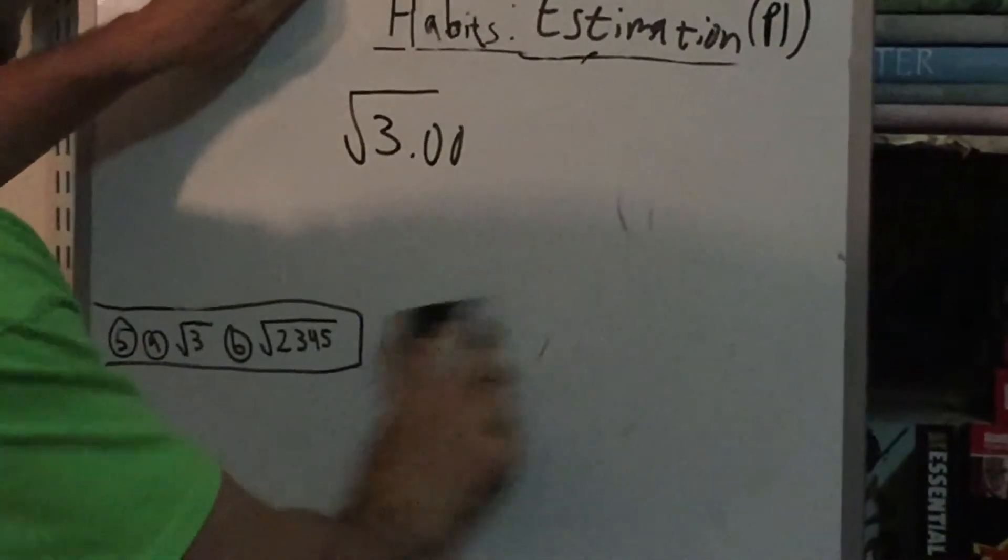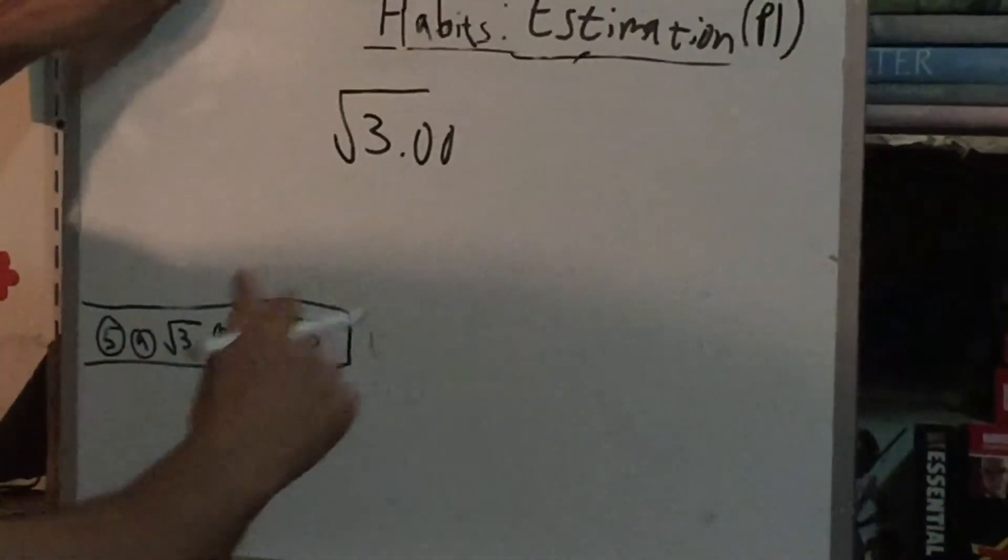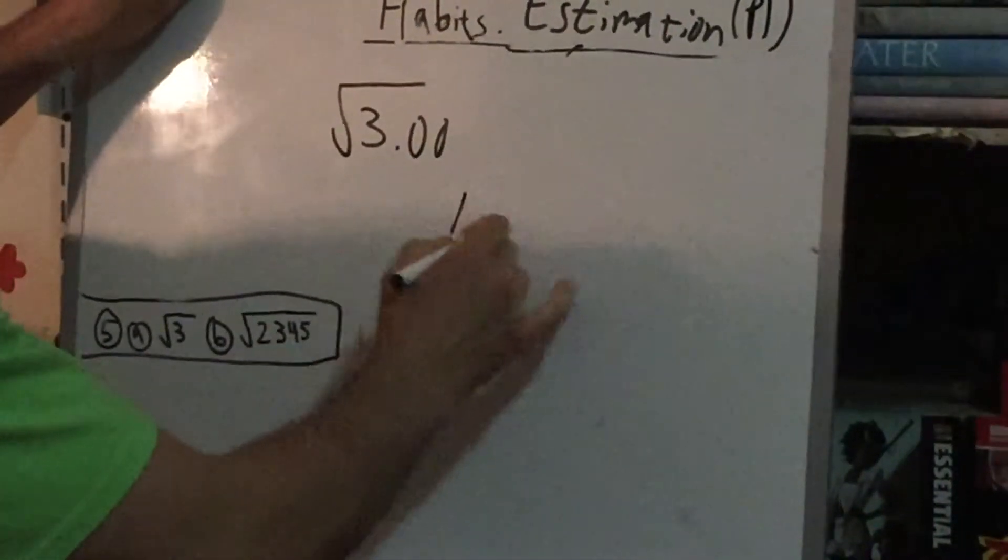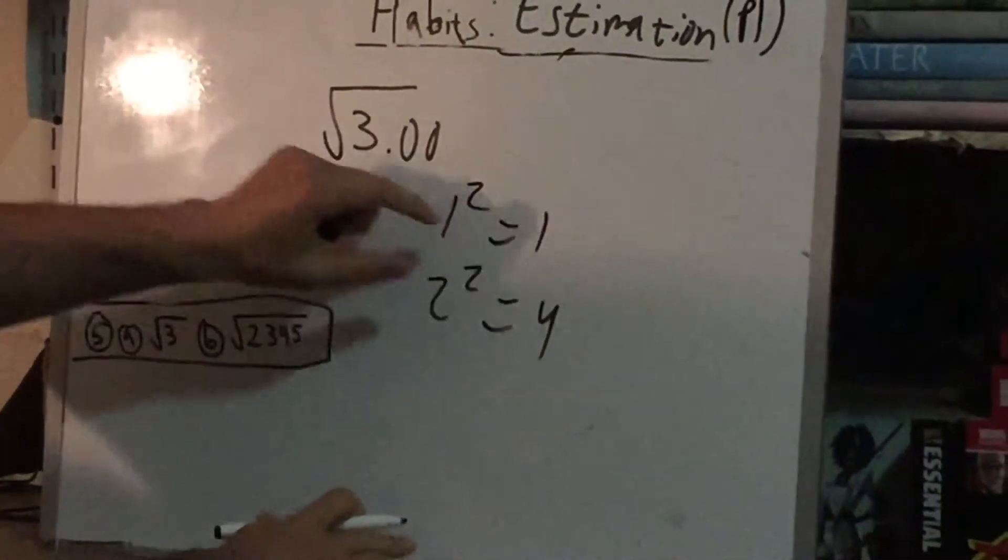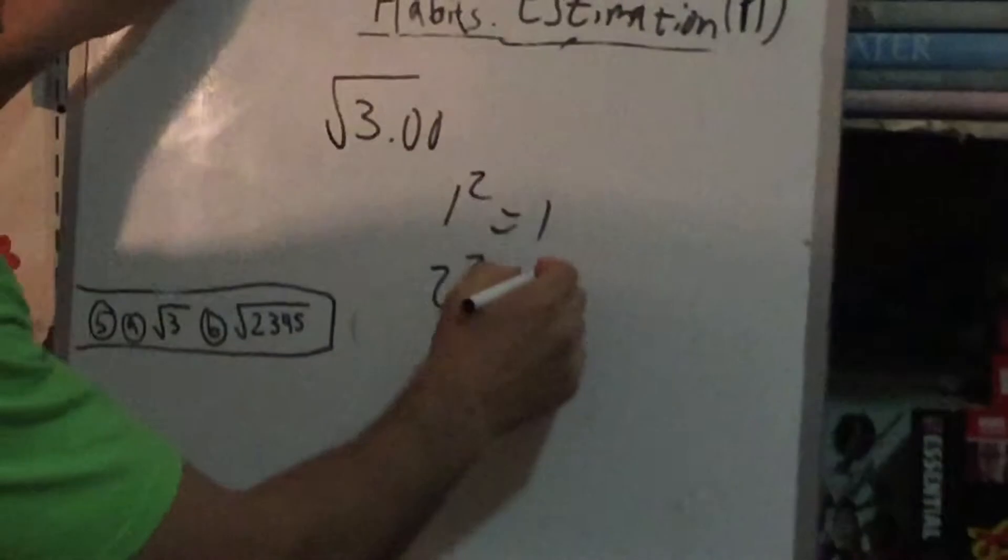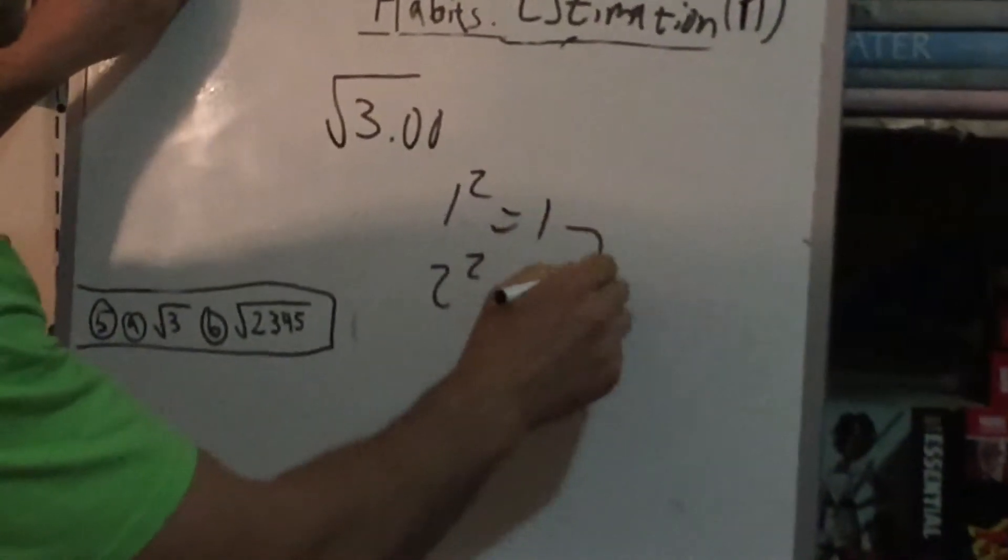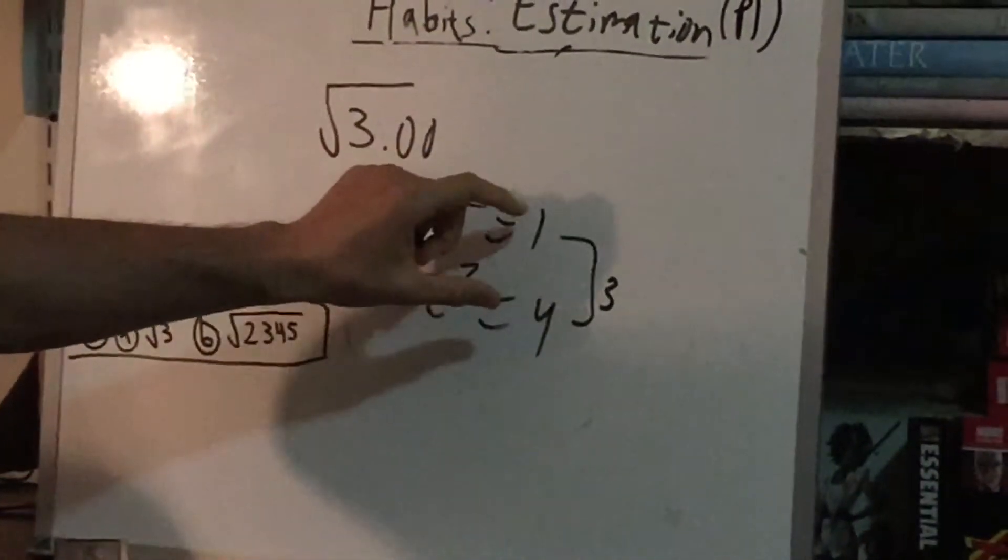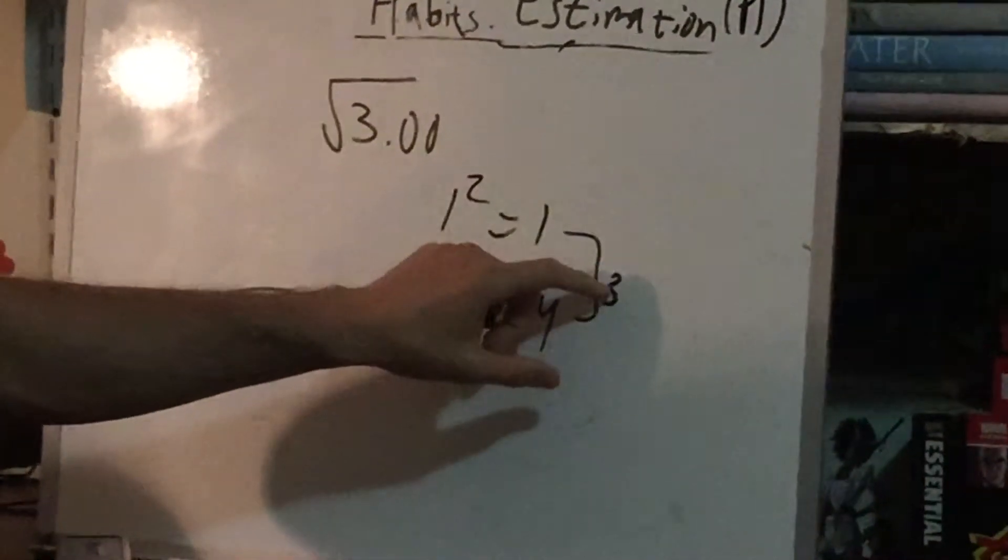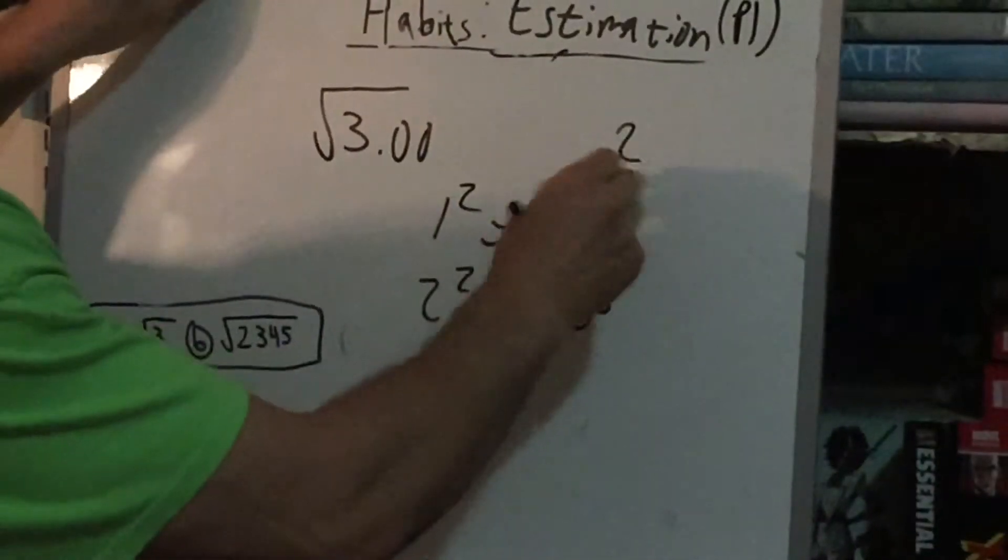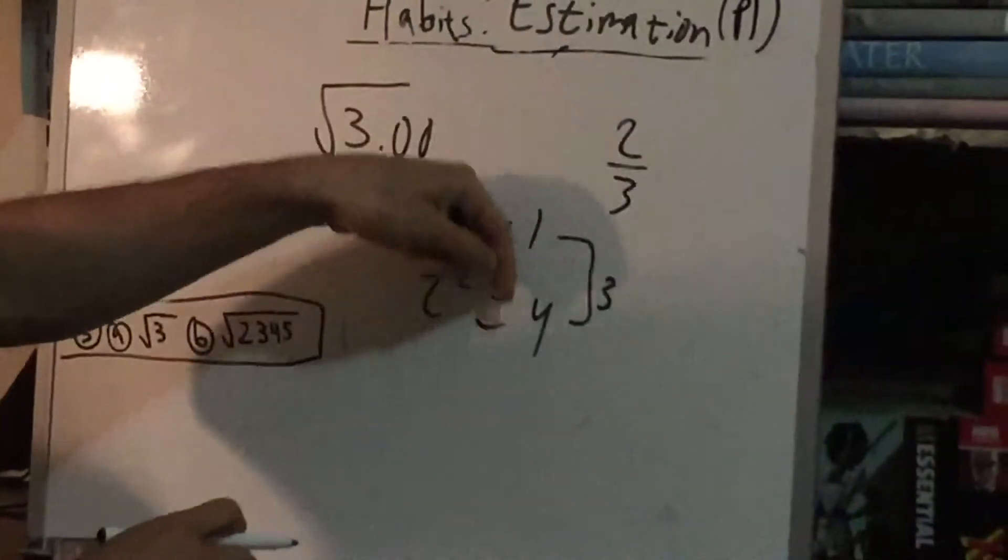Now, you might say, okay, well, I know there's 1 squared, which is 1, and 2 squared, which is 4. And since 3 is in between 1 and 4, the distance from 1 to 4 is 3, and the distance from 1 to 3 is 2. So you might say it's 2 thirds of the way from 1 to 4.